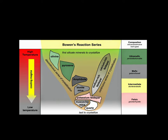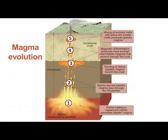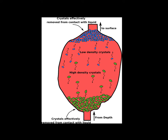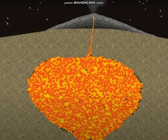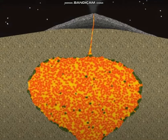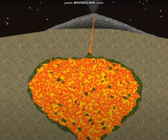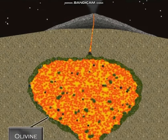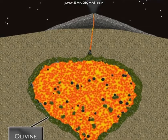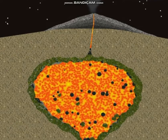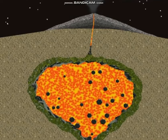Before going into the exact concept of Bowen's Reaction Series, we need to understand fractional crystallization. Crystallization is the process of formation of new mineral crystals from the melt or magma. When we gradually decrease the temperature of the melt, at a particular temperature and pressure condition, crystals start to develop from the melt. Broadly, we have two types of crystallization: equilibrium crystallization and fractional crystallization.